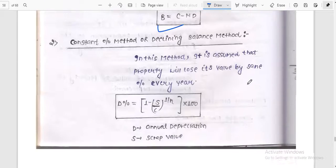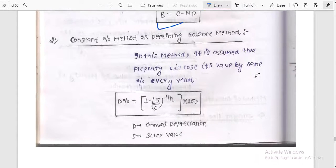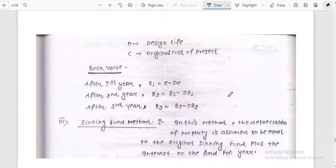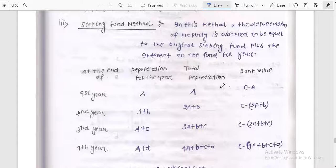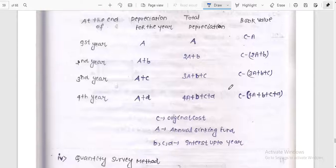Second is constant percentage method or declining method. In this method, D percentage is 1 minus S by C to the power 1 by n into 100. And sinking fund method. There is another important method, sinking fund method. In this method, the depreciation of the property is assumed to be equal to the original sinking fund plus the interest on the fund for the year. Then quantity survey methods. These are various methods which are used.